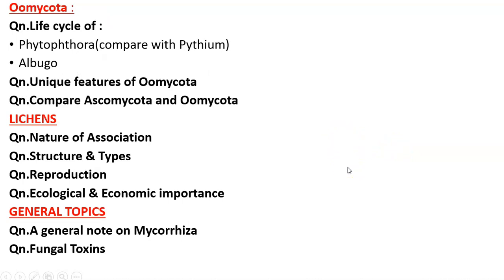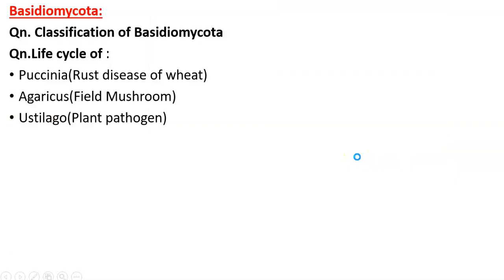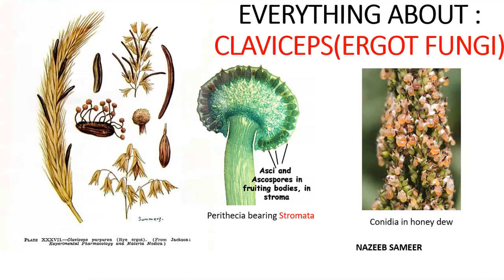Then we'll see Oomycota, the fungi-like organism phylum, covering Albugo, Phytophthora, and Albugo, followed by lichens, mycorrhiza, fungal toxins, etc. Coming to today's agenda — you can see this is a rye plant, and in that plant you can see this particular black-colored structure, which is known as sclerotia. This is the fungal infection in the rye plant.